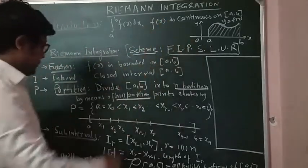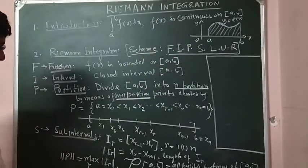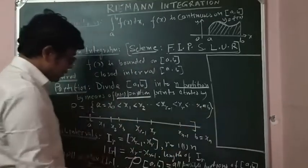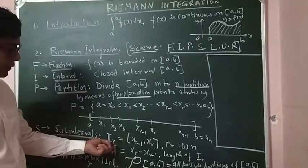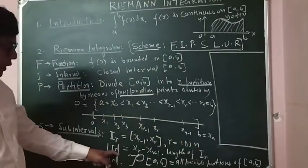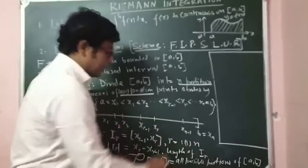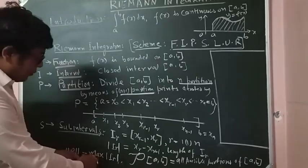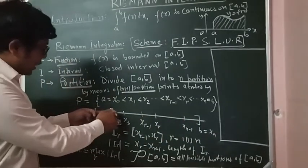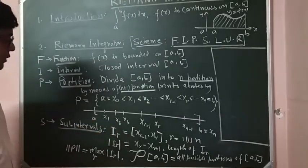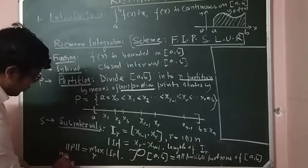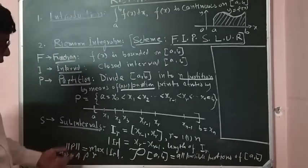S we have considered as the subintervals. So obviously we got N subintervals 1, 2, 3, 4 and so on, and we denote this subinterval by I_R. So capital I_R is the closed interval [X_{R-1}, X_R], for R equal to 1 to N. We denote |I_R| as the length of the subinterval I_R. And we define norm P as the maximum over R of the lengths of the subintervals — these are not necessarily equal subintervals, these are unequal subintervals — and the maximum of the lengths we are calling as norm P. We denote script P of the closed interval [A, B] to denote the set of all partitions of [A, B].